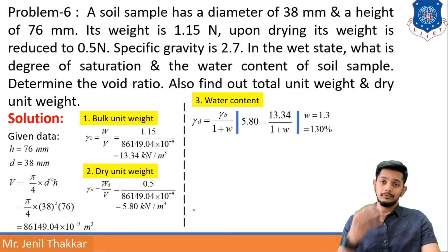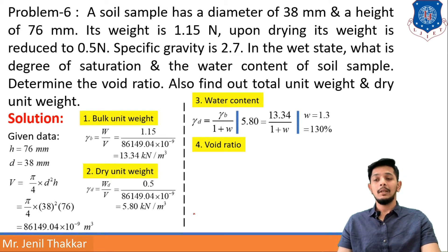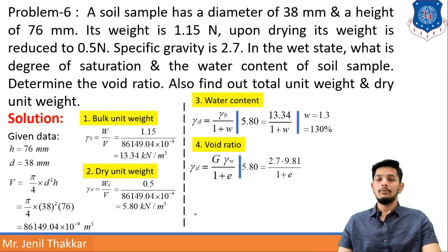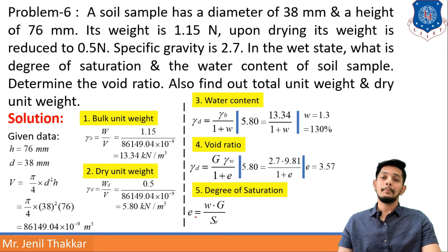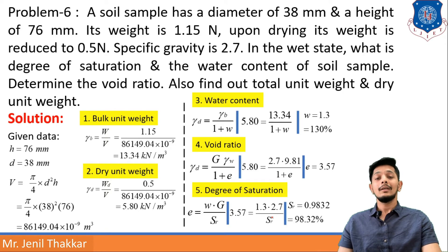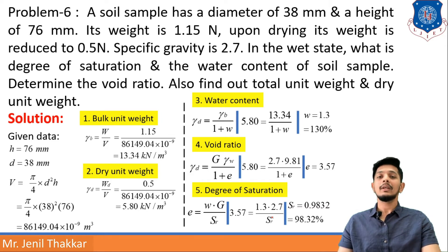Next I find void ratio and degree of saturation. Using gamma_D, G, and gamma_W in the formula, I get void ratio E = 3.57. For degree of saturation, using the formula E = w·G/SR and putting in the values of E, G, and w, I get SR = 98.32%. That is how we find all the required properties step by step, but you need to remember all the formulas.